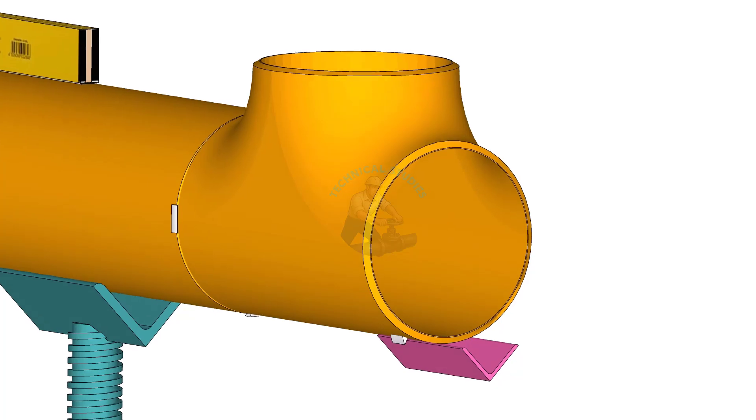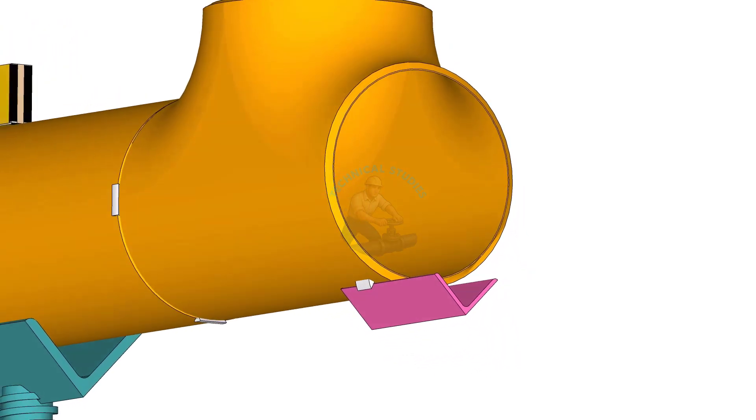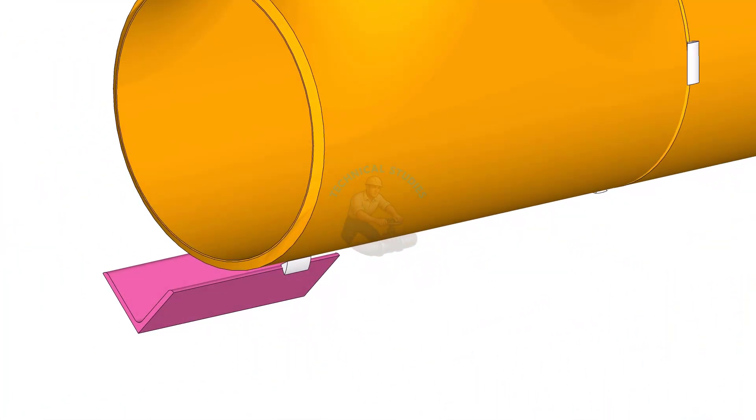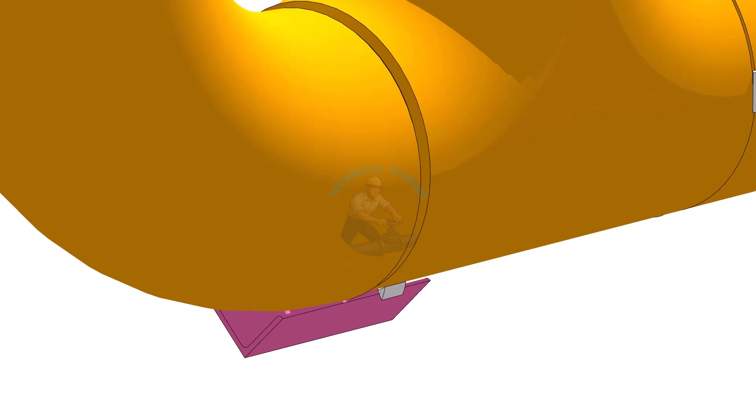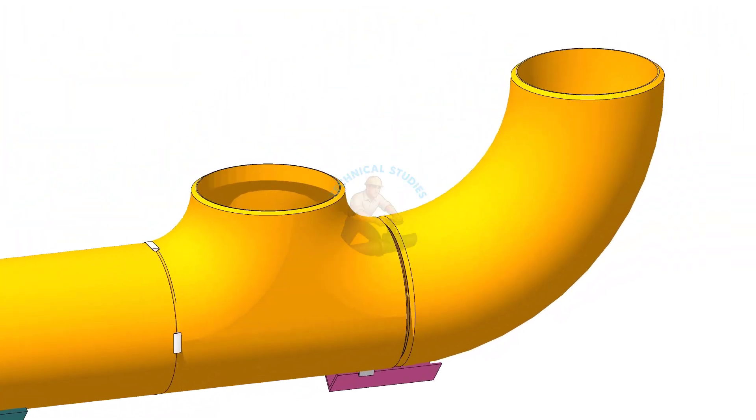Tack weld a piece of angle below the tee as shown. The size of the angle may be 40mm to 60mm. Here, I used a 50mm angle.